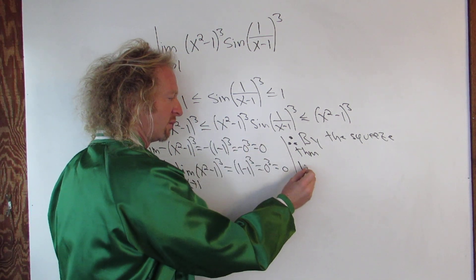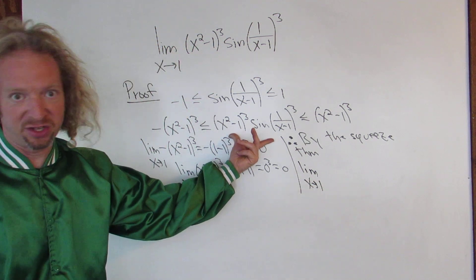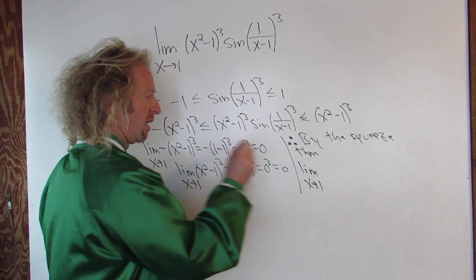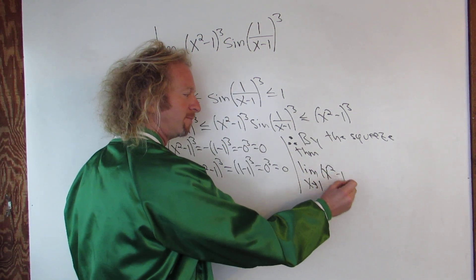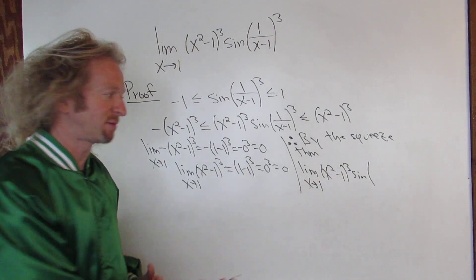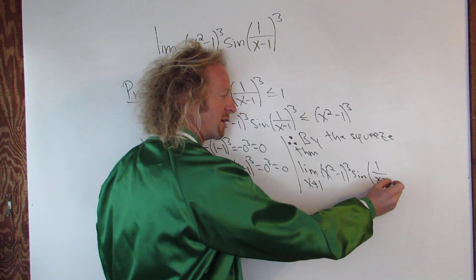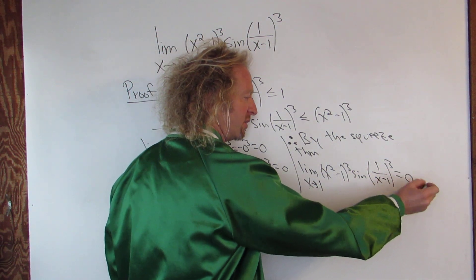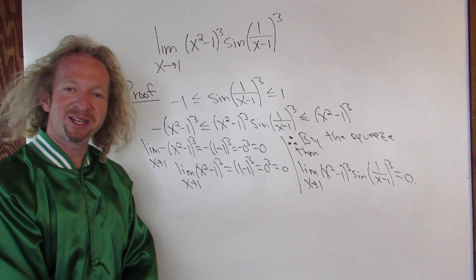So by the squeeze theorem, our limit, which is the limit as x approaches 1, so the limit of this, which is the same thing as this, (x squared minus 1) cubed, and the sine of parentheses, 1 over (x minus 1) cubed. So 1 over (x minus 1) cubed is equal to 0. And that completes the proof. Nice problem, that's it.